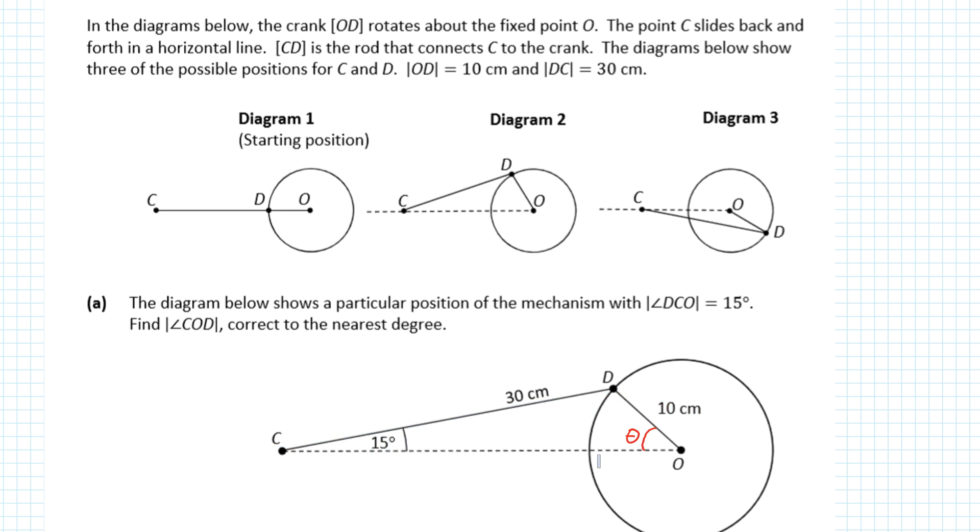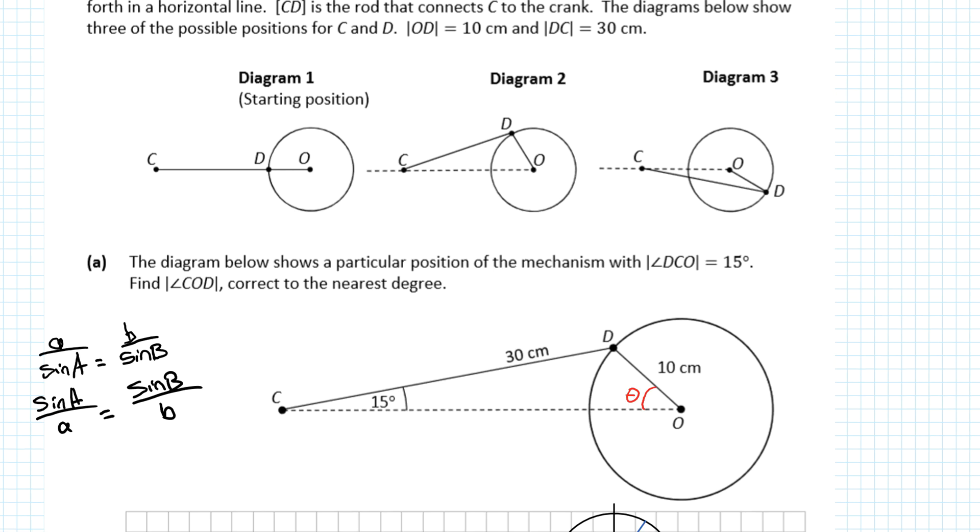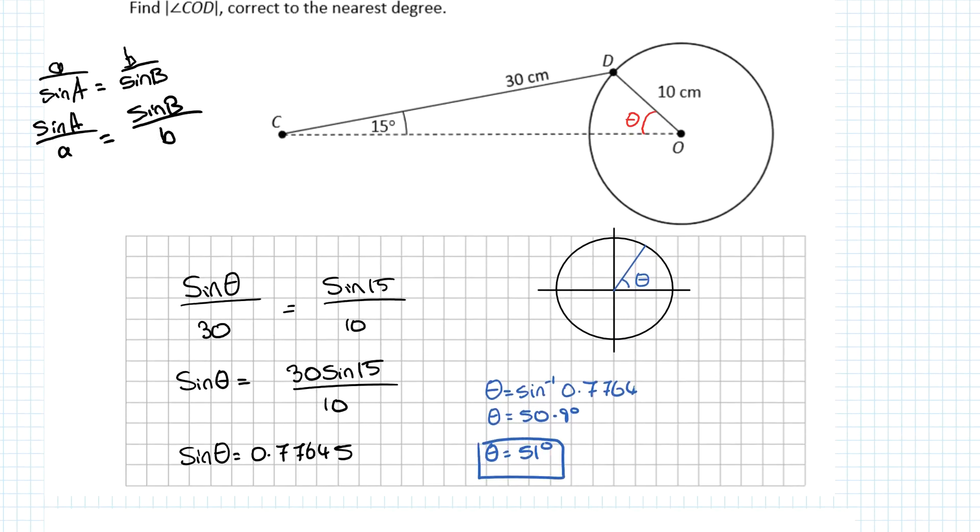We're going to use the sine rule and always write what you're looking for first. The sine rule could be written as a over sin a equals b over sin b. But we're looking for the angle, so we write it as sin θ over 30 equals sin 15° over 10. Multiplying both sides by 30, it appears here.